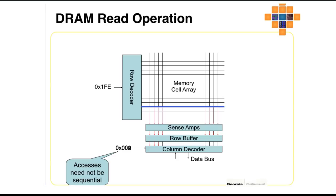In a DRAM read operation, when we have to read an address, the row decoder decodes the particular row mentioned in the address. That particular row is then pushed to the sense amplifier, and you can access all the columns associated with this row. For example, if this row is row 8, you can access column 0, column 1, column 2, column 3 — meaning memory locations 8,0 | 8,1 | 8,2 | 8,3.